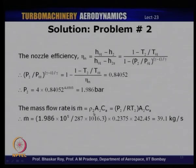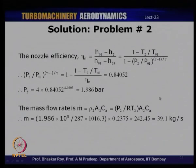For the mass flow rate, ṁ = ρ × A × Ca, where density ρ = P2/(RT2) and the annulus area A is calculated from the tip diameter and blade height. Substituting all values gives a mass flow rate of 39.1 kg/s. This completes the second question — a 50% reaction turbine stage — where the symmetry of velocity triangles simplified the calculations significantly.